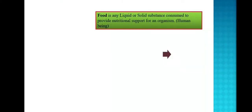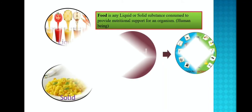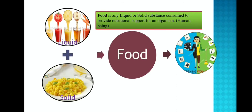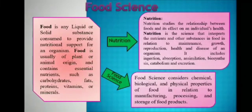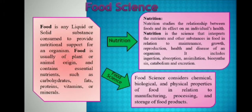Before that, we know about food. Food is any liquid or solid substance consumed to provide nutritional support for an organism. Food is usually of plant or animal origin and contains essential nutrients such as carbohydrates, fats, proteins, vitamins or minerals. Foods give nutrition for the body.